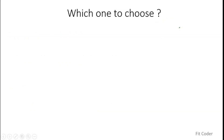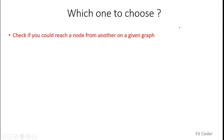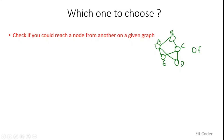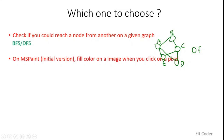To check for graph connectedness — whether a particular node is reachable from another node — we can use either BFS or DFS, as both can check for graph connectivity. Similarly, for a flood fill algorithm (like the earlier MS Paint where clicking a pixel colors all neighboring pixels the same color), it checks all connected nodes and colors them the same. In this case too, we can opt for either BFS or DFS.